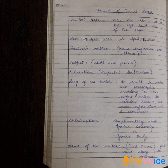Below the date is the receiver's address, which includes the name and designation along with the address. Next comes the subject, which should be short and precise but at the same time should convey the main objective of the letter.